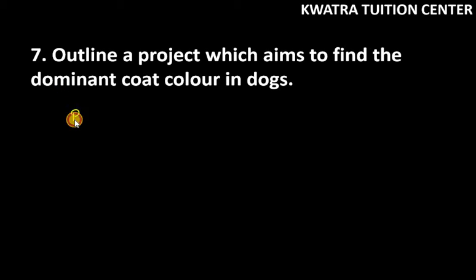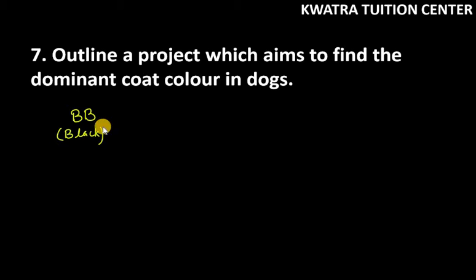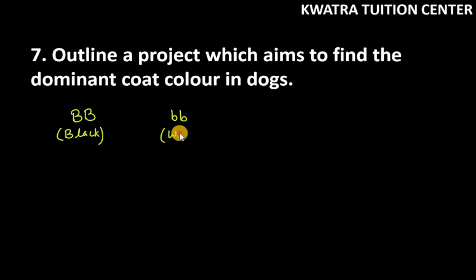They said you can take anything from your own words. So let's assume that a male dog has a black coat color and is dominant — capital B, capital B. Then let's assume that a female dog has a white coat color and is small b, small b. So capital B is for black and small b is for white. First of all, let's make gametes.